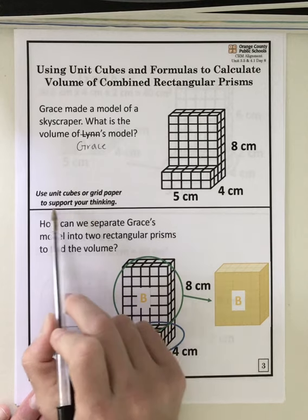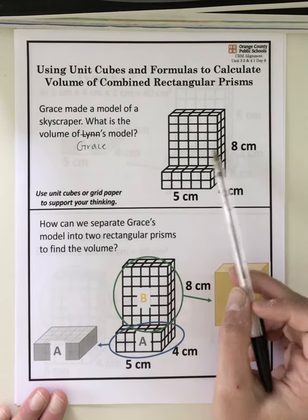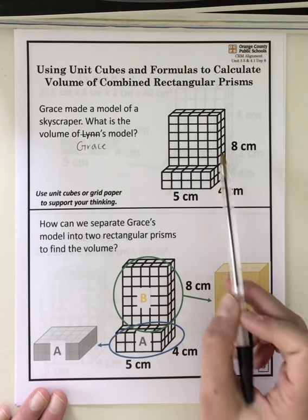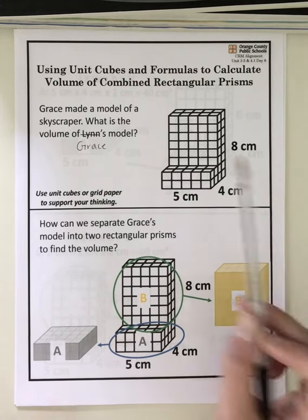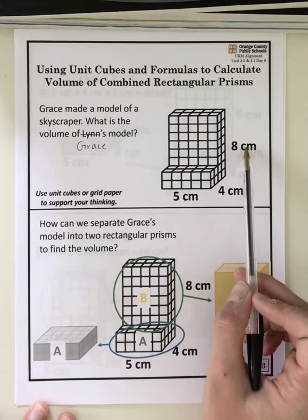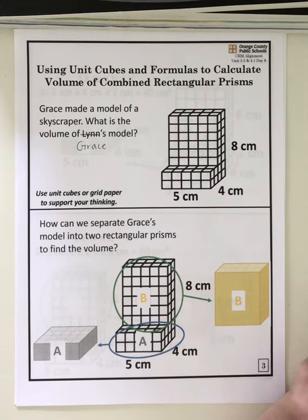Use unit cubes or grid paper to support your thinking. If you have blocks at home, you can go ahead and try to make a model of Grace's figure, but I see the dimensions here, so I'm just going to use my paper.